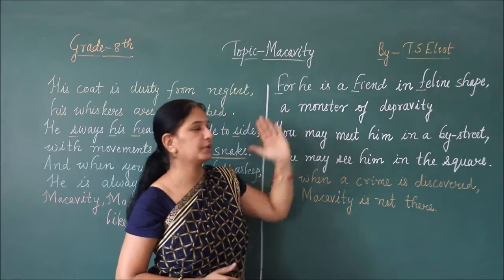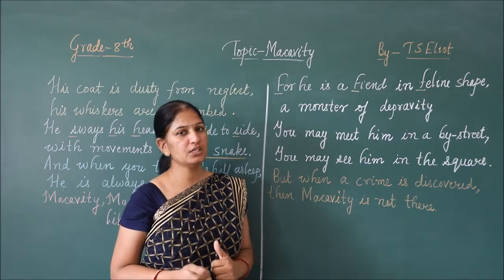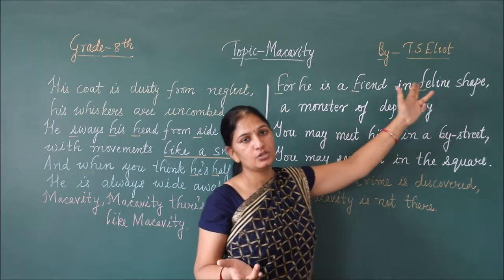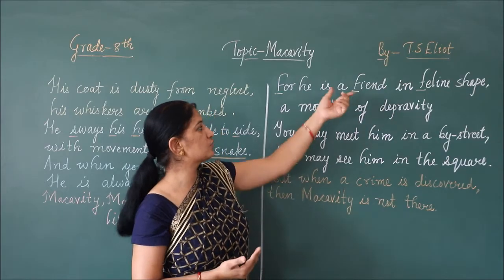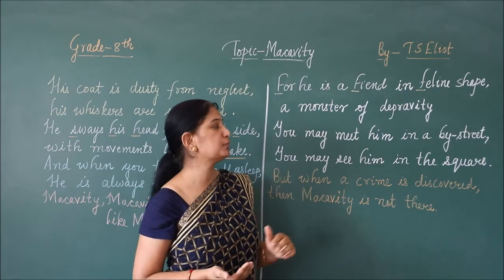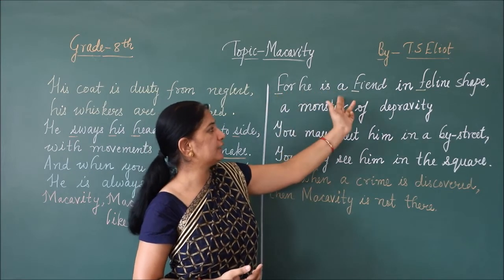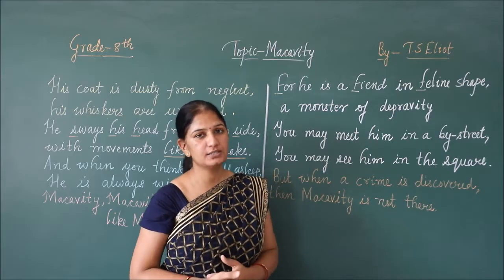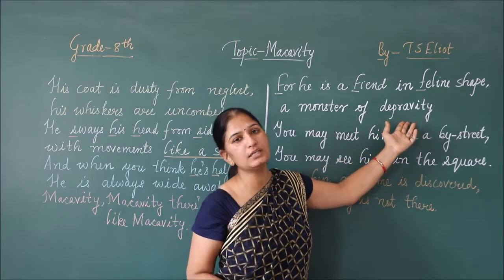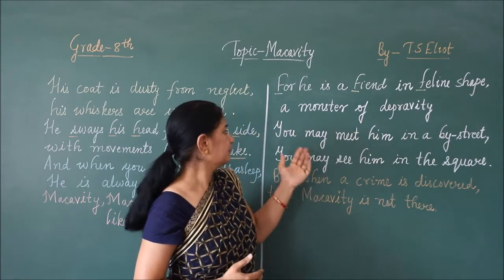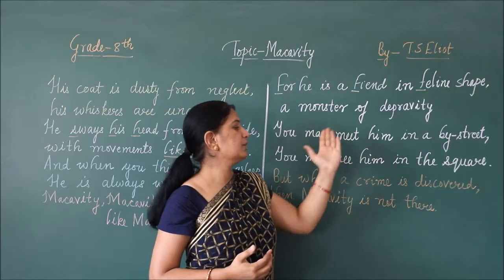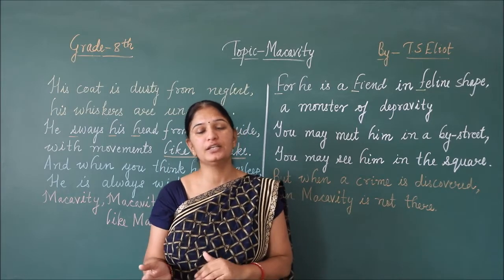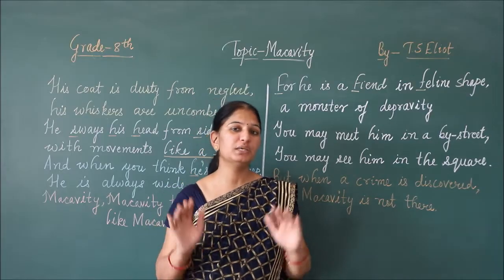For he is a fiend in feline shape. There is no one like McCavity because he is a fiend — fiend means an evil spirit — in feline shape, and feline means cat. He is so wicked that he is like a fiend. In this line, the letter F is repeated, so the figure of speech is alliteration. A monster of depravity — he is like a monster of wickedness. Depravity means wickedness; he is morally corrupt. You may meet him in a by-street or in the square, but when a crime is discovered, McCavity is not there.